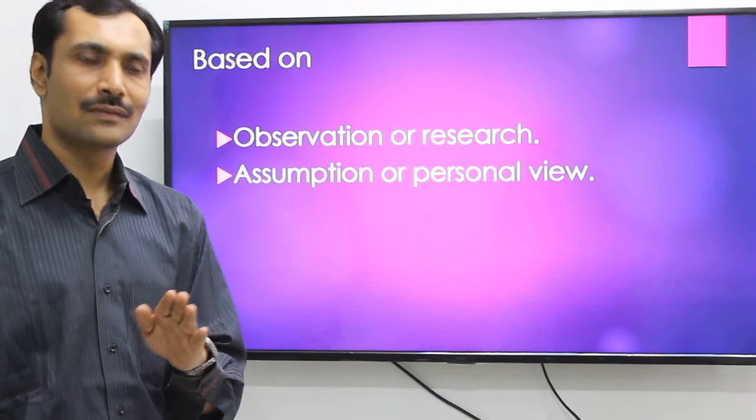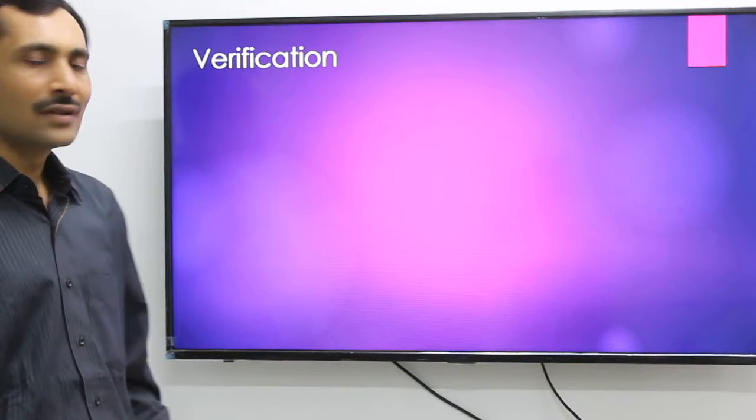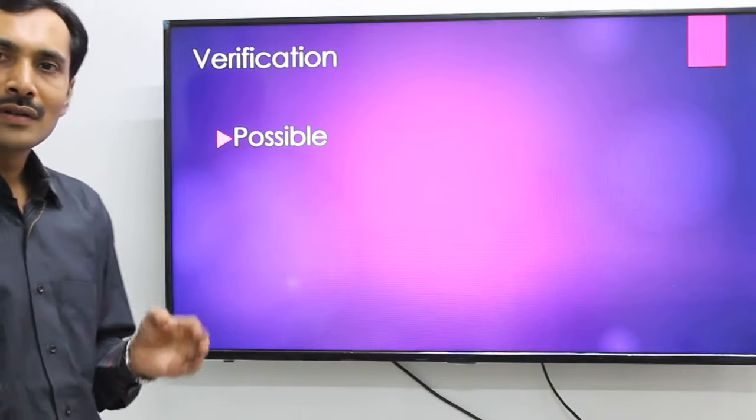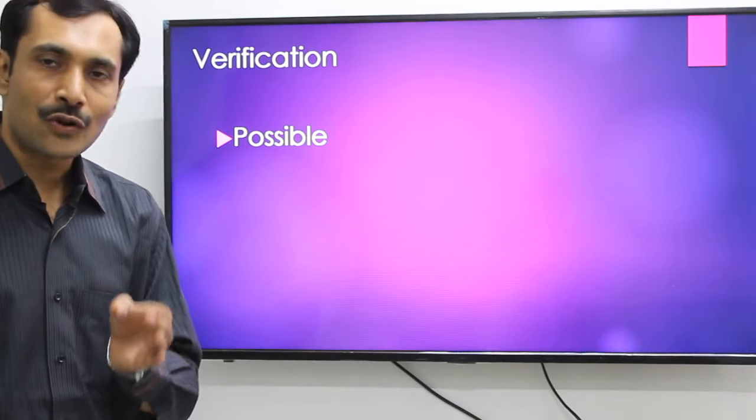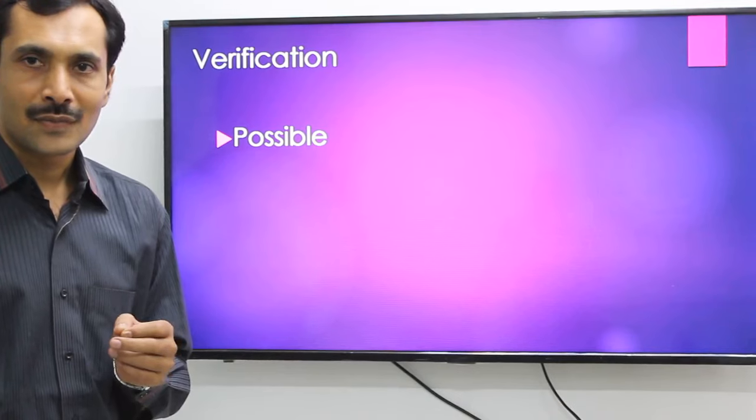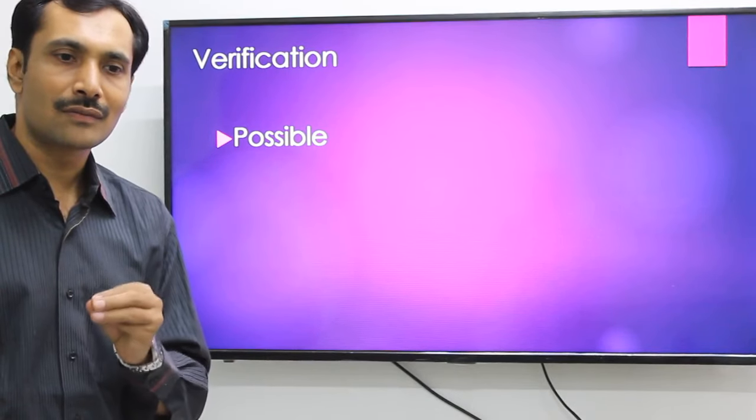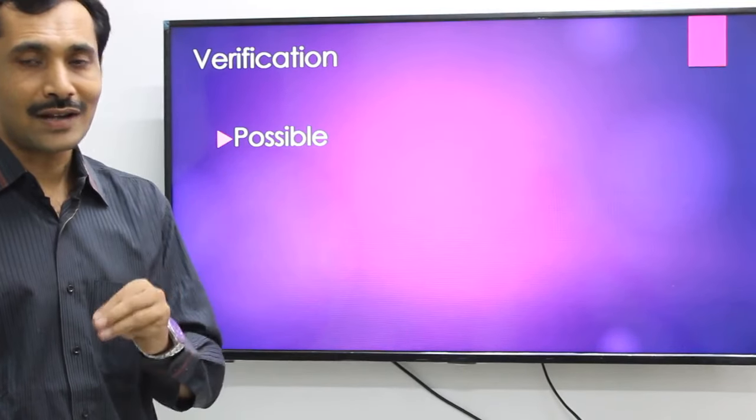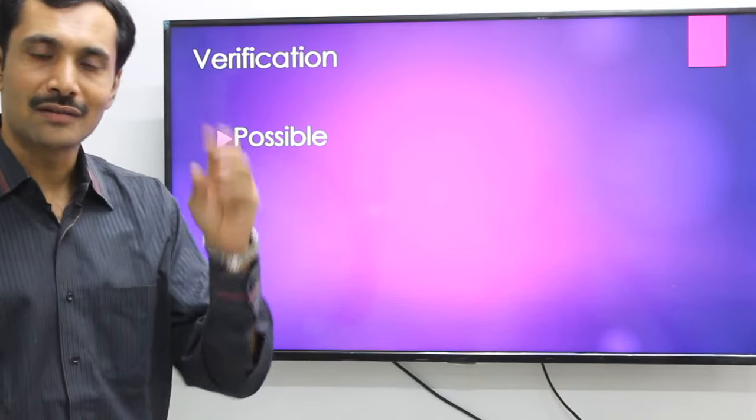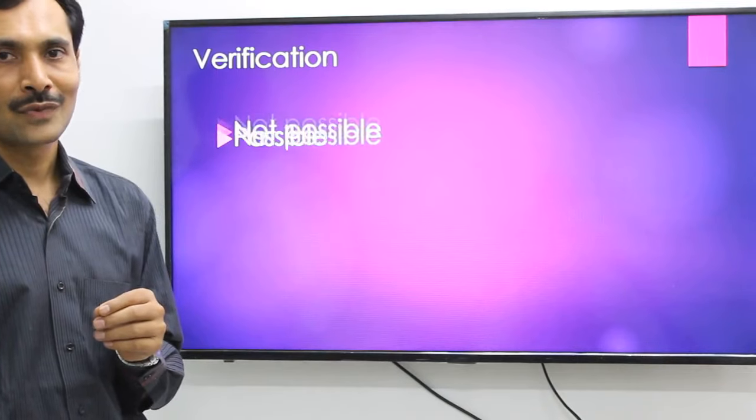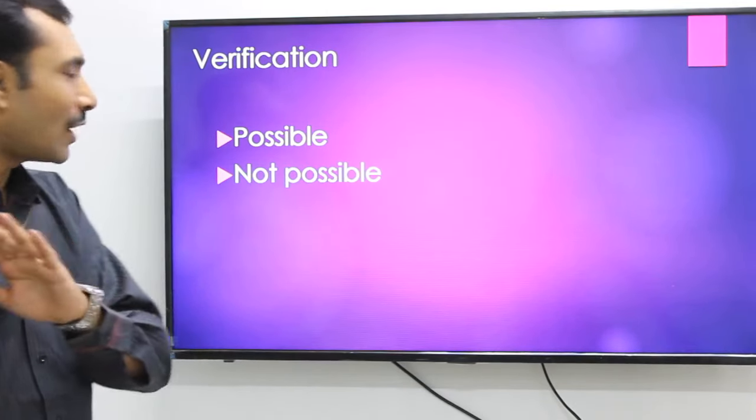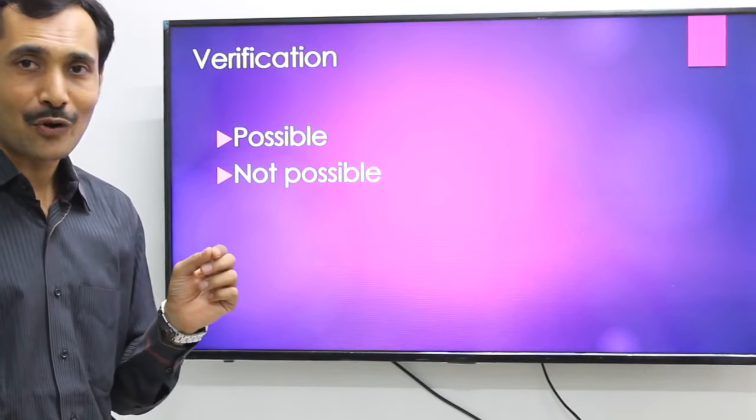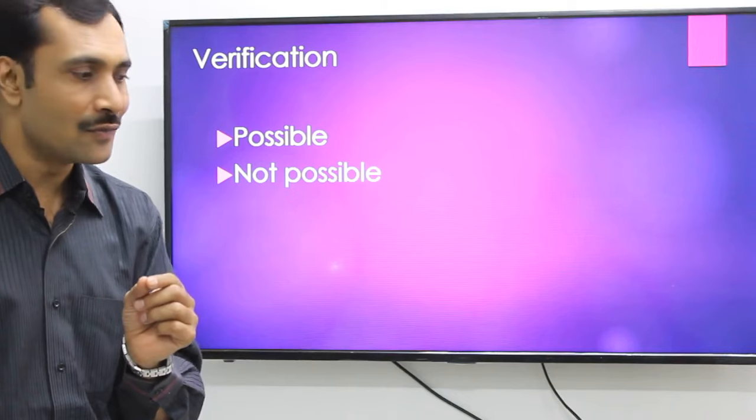Third point, verification. As we earlier understood, the fact is possible to be verified. Somebody says he was present at the time when the murder was committed, so the fact, if it is a fact, should be possible to be verified. On the other hand, in opinion it is not possible to be verified.